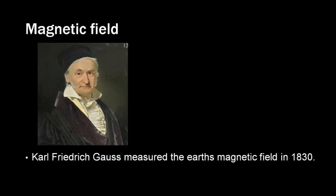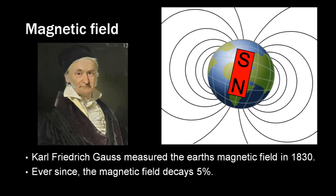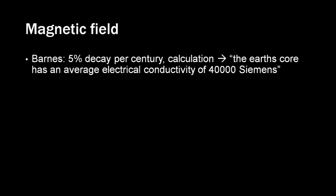The first one to ever measure the magnetic field was Karl Friedrich Gauss in 1830. Ever since we measured the magnetic field, it decays with a rate of 5% per century. Another scientist, Barnes, calculated based on this decay value that the Earth's core has an average electrical connectivity of 40,000 Siemens. We know the size of the Earth's core, and we know that it's made of iron.